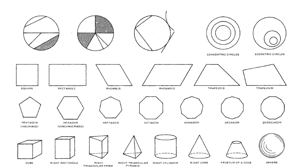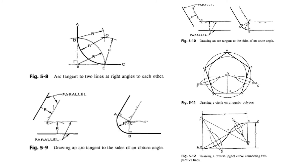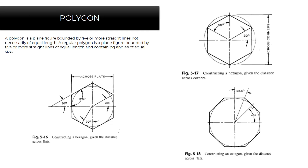We also have some forms: the cube, right rectangle, right triangular prism, right triangular pyramid, right cylinder, right cone, frustum of a cone, and the sphere. These are samples of how you draw your lines, and some instructions on how you draw your arches and regular polygons. A polygon is a plane figure bounded by five or more straight lines, not necessarily of equal length. A regular polygon is a plane figure bounded by five or more straight lines of equal length and containing angles of equal size.